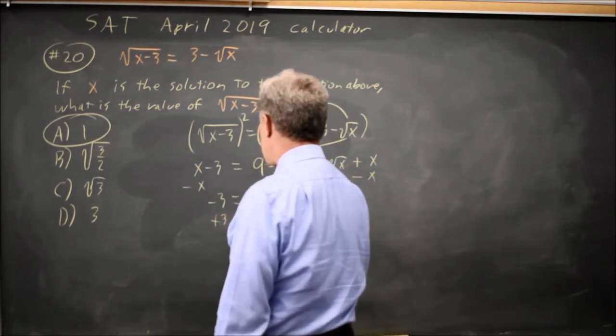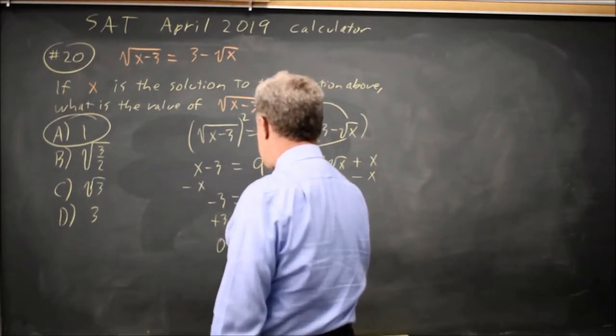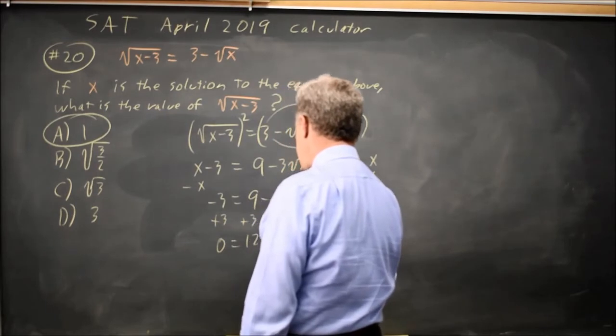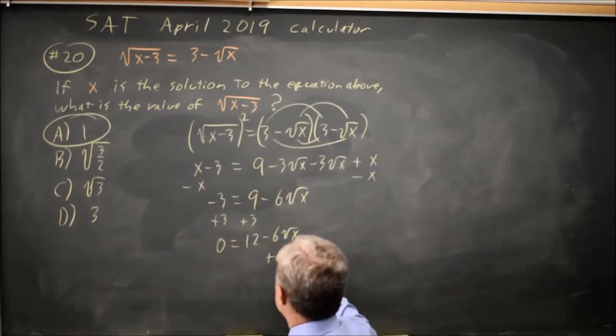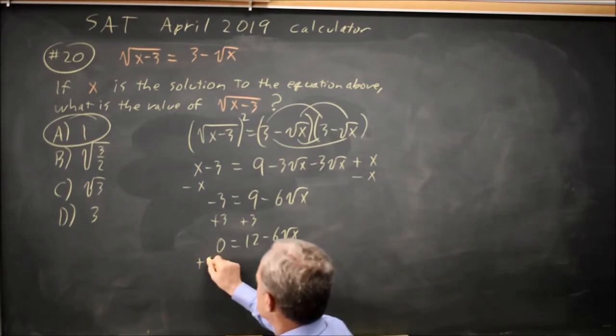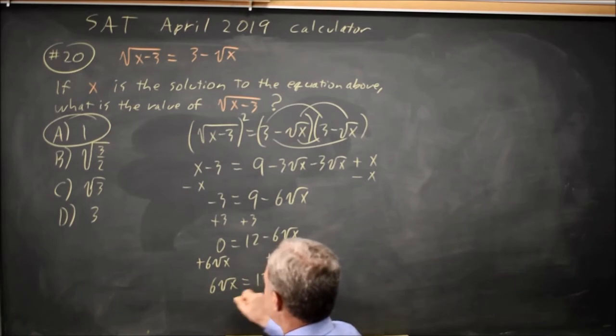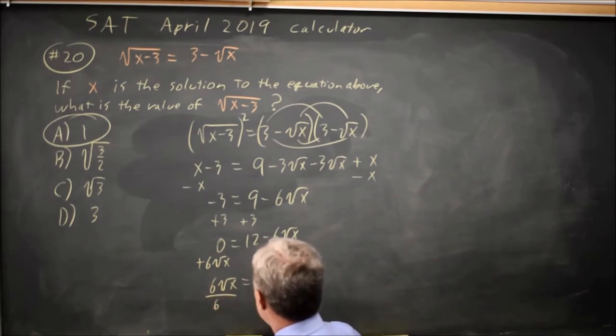Add 3 to both sides, I get 0 equals 12 minus 6 root x. Let's add 6 root x to both sides. So I have 6 root x equals 12 divided by 6. All this is to get root x by itself. Root x equals 12 over 6 is 2.